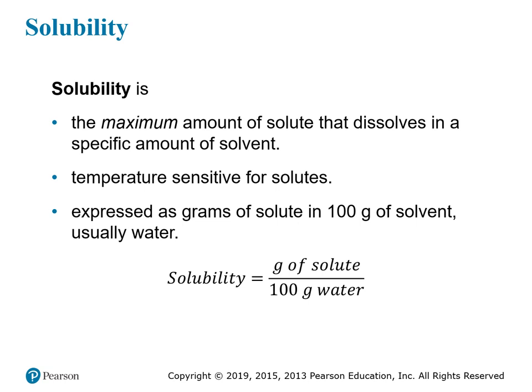Solubility is temperature sensitive. When you change the temperature of the solvent, it changes how much solute it can dissolve, and so it changes the solubility. Typically, we worry about solubility in water, and it's often expressed as the grams of solute that can dissolve in 100 grams of solvent — usually water. So: solubility equals grams of solute per 100 grams of water.